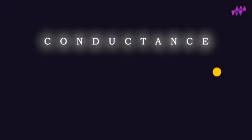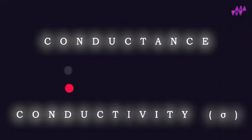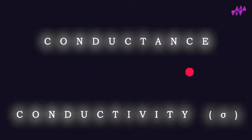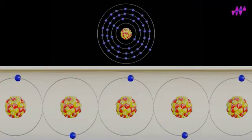A material's conductance is determined by a number of factors. Firstly, material conductivity, which is determined by the crystal structure and chemical composition of the material, and how loosely the electrons are bound to the atom.